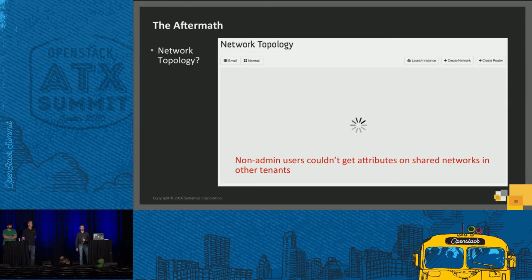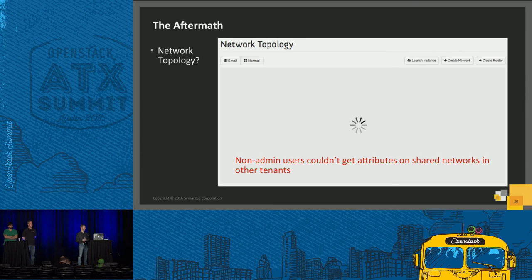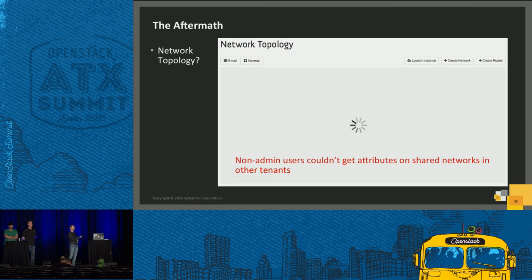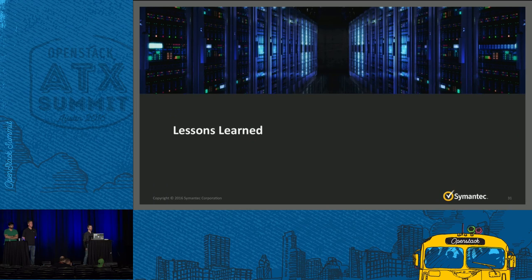We also saw some issues that manifested in ways we didn't expect. After we made the Neutron policy changes, we made it so that non-admin users couldn't get attributes on shared networks in other tenants. When they went to the network topology page after that, they saw just a forever-loading spinner. We would have expected that if a user lost access to some API they'd see an error message in Horizon, but what we really saw was just a page that loaded forever. It took some figuring out that this was even related to RBAC, and then of course debugging to figure out what was actually going on.